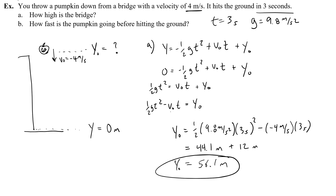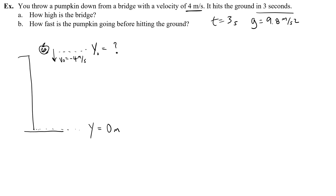Add those two together and you get 56.1 meters. So that is the initial height, and therefore the height of the bridge, because that's where you threw the pumpkin down from. Now let's work on part B: how fast is the pumpkin going before hitting the ground? I've cleared some space and I'm going to draw the pumpkin right at the ground — just before it hits — so it hasn't actually hit the ground yet. There's going to be some final velocity that's much bigger.